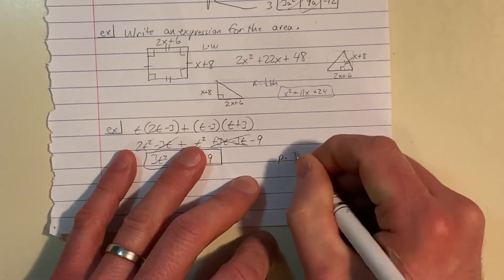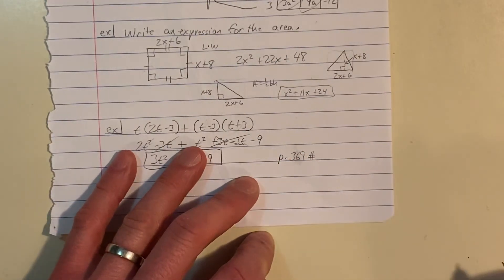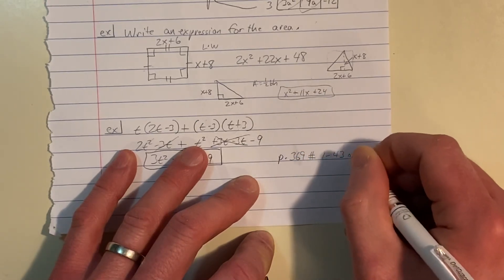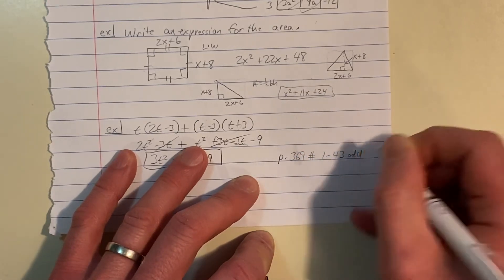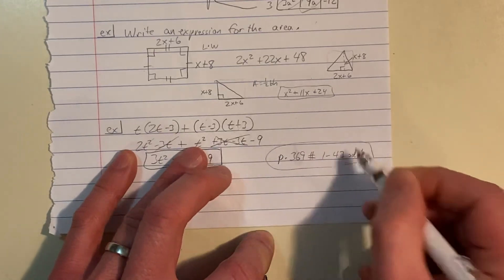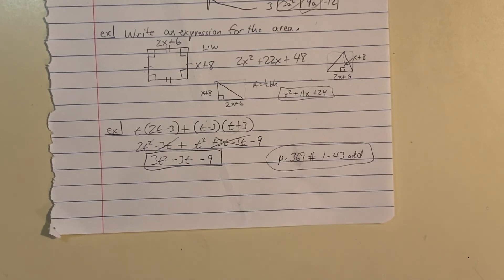Page 369, numbers 1 through 43 odd. If you're feeling a little overwhelmed, you could do every other odd. Do whichever method you want — table, distribution, do whatever. You just want to get some practice and check those answers. Have a great day.